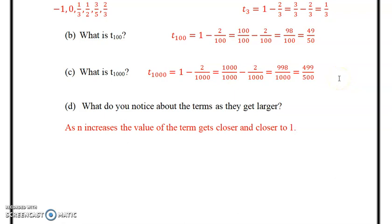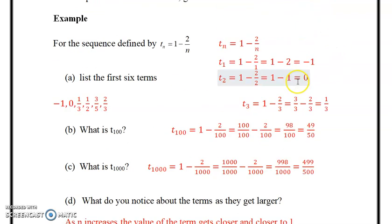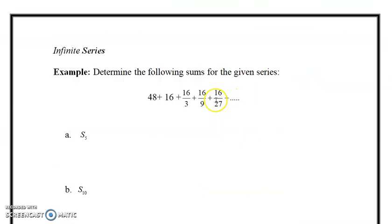It's obviously not going to reach one, and you'll learn more about this in calculus 12. So as n increases, the value of the term gets closer and closer to one. You can put ten thousand, so you'd reach 9998 over 10,000, which would be 4999 over 5000, so it'll increase closer and closer and closer to one.